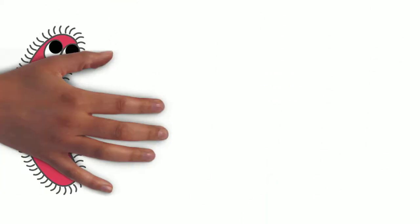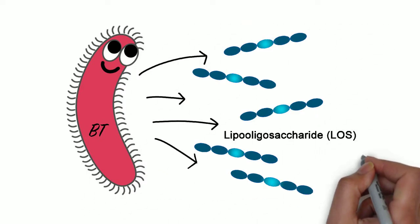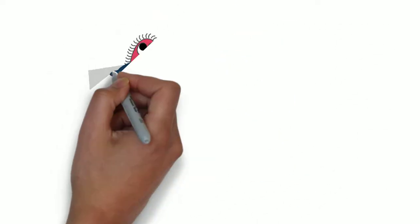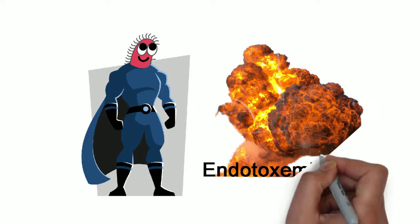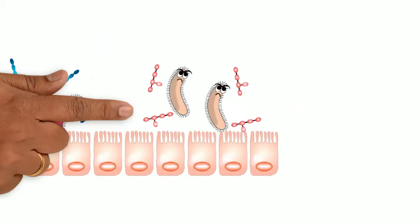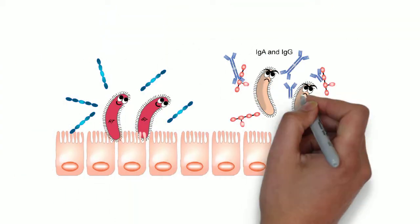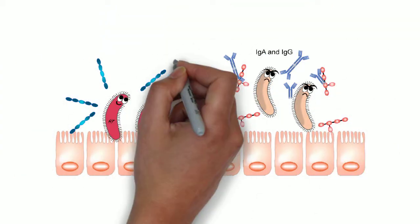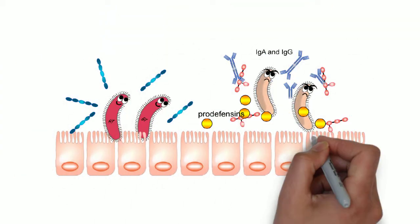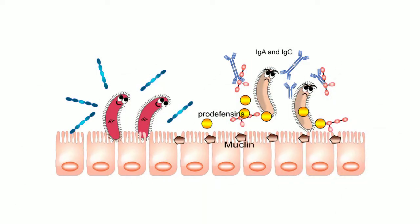Gram-negative Bt produces lipooligosaccharide, LOS, instead of LPS. Bt mitigates endotoxemia in three ways. First, they upregulate host gene expression of IgA, IgG, prodefensin, and cytosis-protecting mucin.